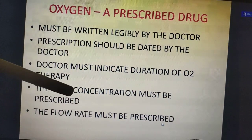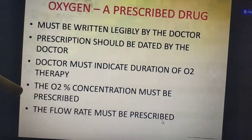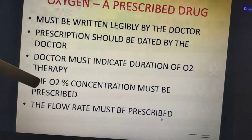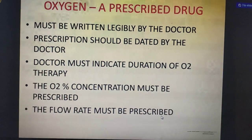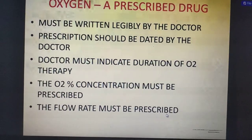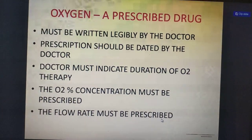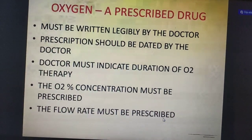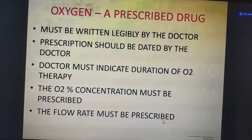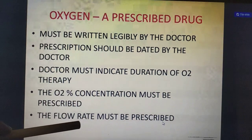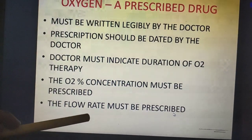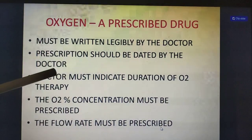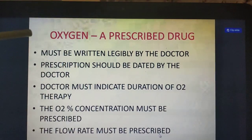The oxygen concentration percentage must be prescribed, and the flow rate must also be prescribed — for example, one liter per minute, two liters per minute, four liters per minute — based on the patient's condition. The flow rate is nothing but one, two, or four liters per minute. The duration, concentration, and flow rate all must be followed according to the doctor's prescription.